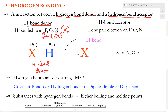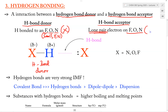Now let's define a Hydrogen Bond acceptor. A Hydrogen Bond acceptor is basically the lone pair of electrons on the Fluorine, Oxygen, or Nitrogen. Only these three atoms can make up the Hydrogen Bond. So we have X and the lone pair of electrons on this X atom — that would be the H-Bond acceptor. We can call this Hydrogen Bond or H-Bond; they refer to the same thing. H stands for Hydrogen.